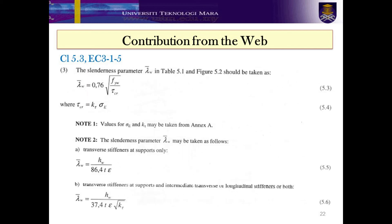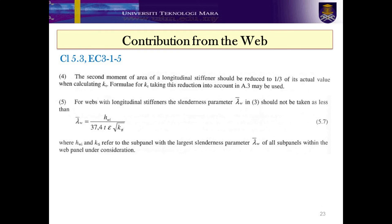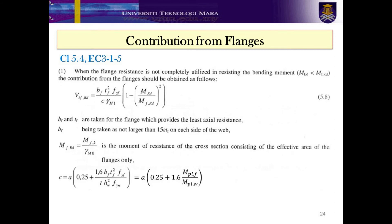Clause 5.3 in EC3 Part 1-5 Number 2, Figure 5.1 shows various end supports for girders. In general, there are three different types of girder supports. Figure 5.1a is a girder with no end post. Figure 5.1b is a girder with a rigid end post. And Figure 5.1c is a girder with a non-rigid end post. Clause 5.3 in EC3 Part 1-5, Numbers 4 and 5. Clause 5.4 in EC3 Part 1-5 Number 1 provides the equation for flange resistance, in which the contribution from flanges can be taken from Equation 5.8.